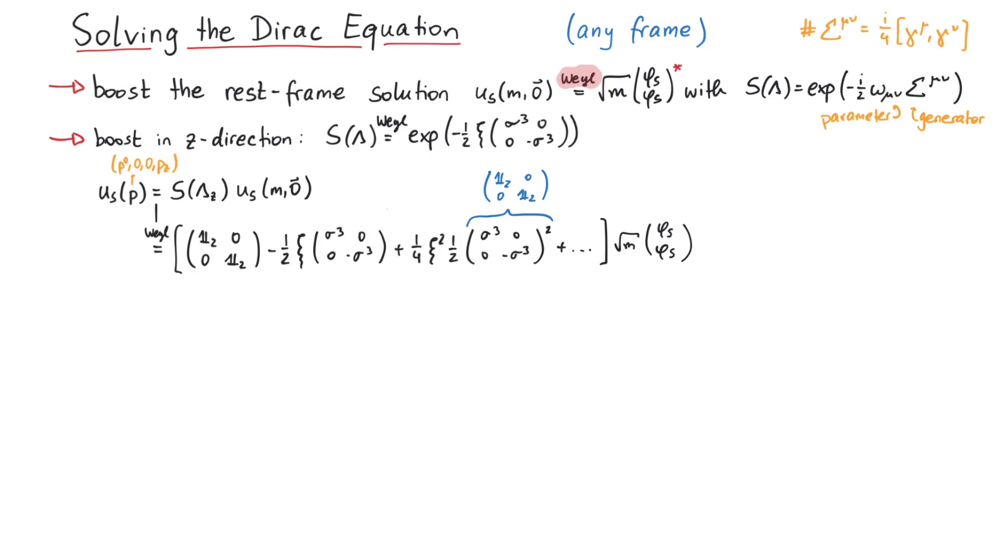By expanding it to many orders, it is possible to recognize the series expansion for the hyperbolic sine and cosine functions. Therefore, this reduces to the hyperbolic cosine of psi over 2 times the identity minus the hyperbolic sine of psi over 2 times the sigma 3 minus sigma 3 matrix.